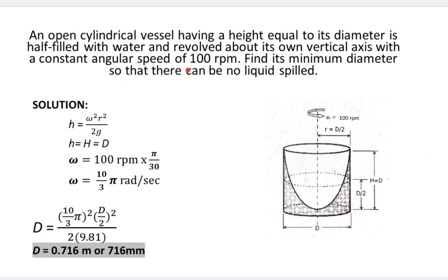of 100 revolutions per minute. Find its minimum diameter so that there can be no liquid spilled.